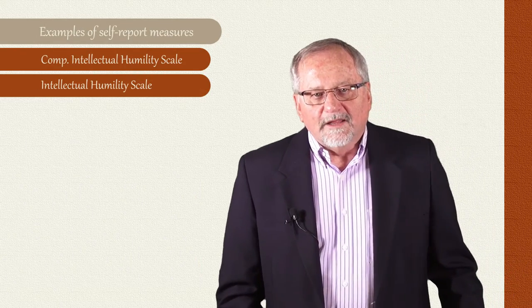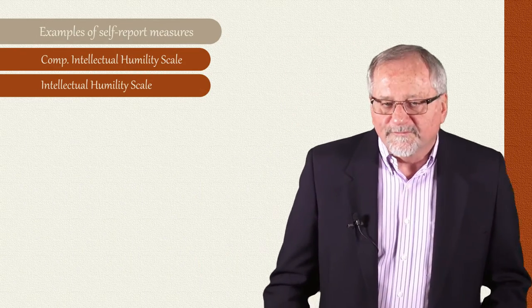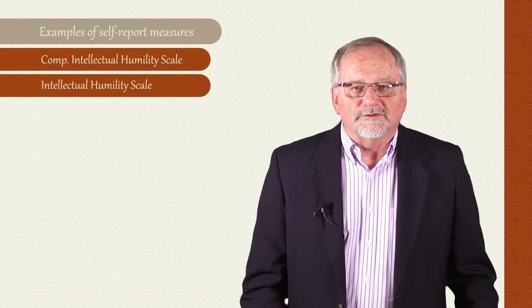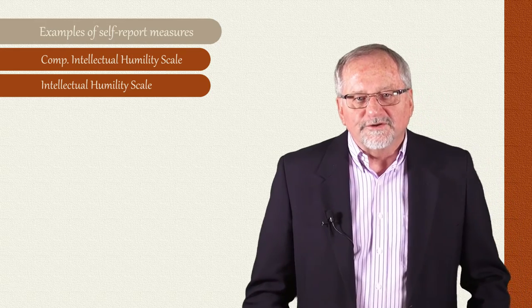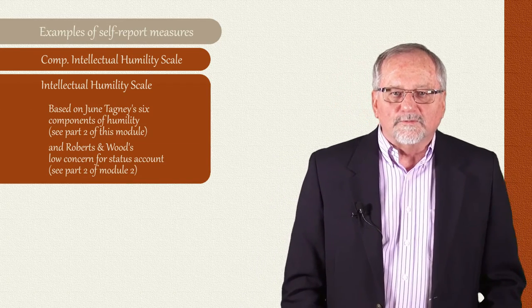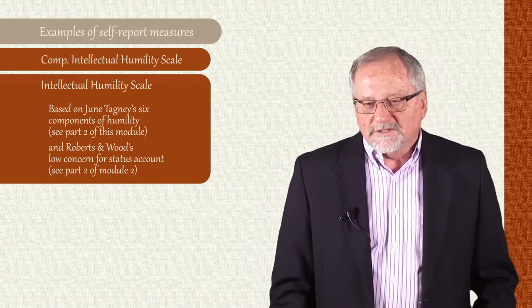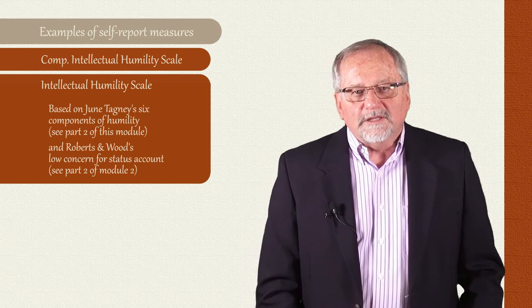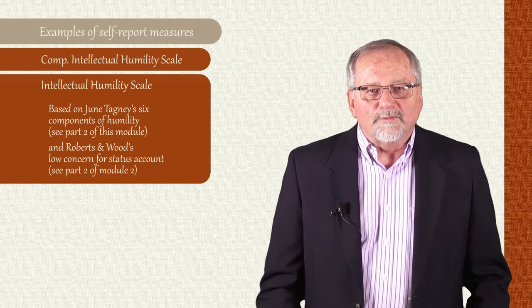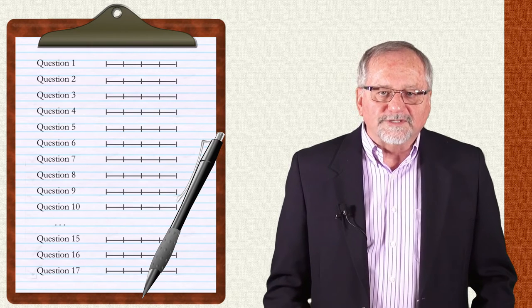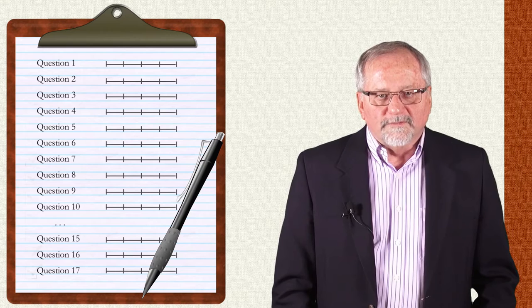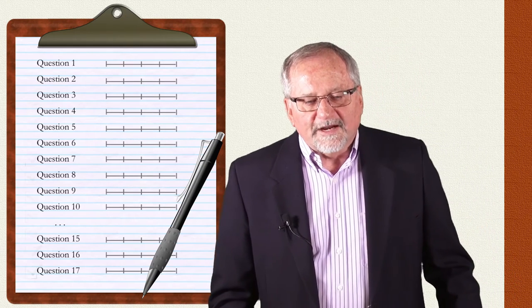The second scale that has been developed is referred to simply as the Intellectual Humility Scale. This is a 17-item self-report measure based on the conceptual work of June Tangney that we talked about briefly in an earlier lecture, as well as the work of Robert Roberts and Jay Wood. Like most of the other scales reported here, this scale is also rated on the five-point Likert scale, with higher scores indicating greater degrees of humility.